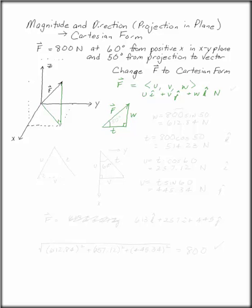So we can use all of our nice trig functions. This is the projection to the vector that you were given. This is 50 degrees. So w is 800 sine 50. That's 612.84 newtons. That's just the magnitude of the hypotenuse times the sine of the angle. Straight trig.